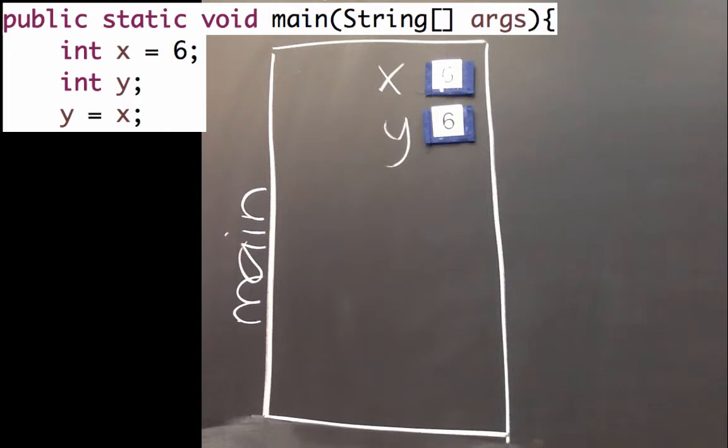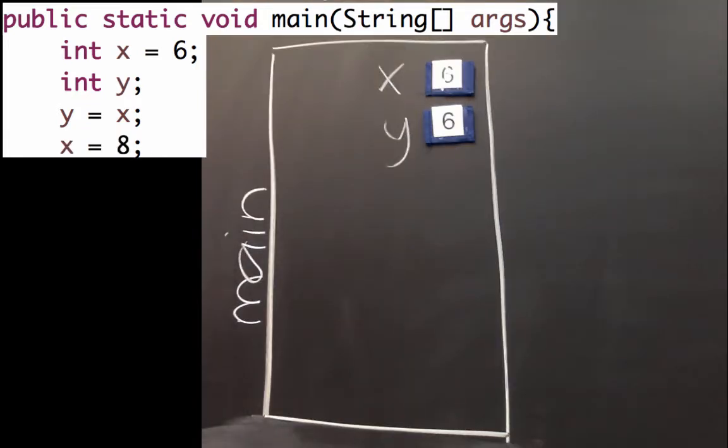Because otherwise it's a little bit confusing, like y equals x, is that the same as x equals y? It is not. So that distinction is super important. And if we change one of the values of these to be 8, the other one wouldn't change.